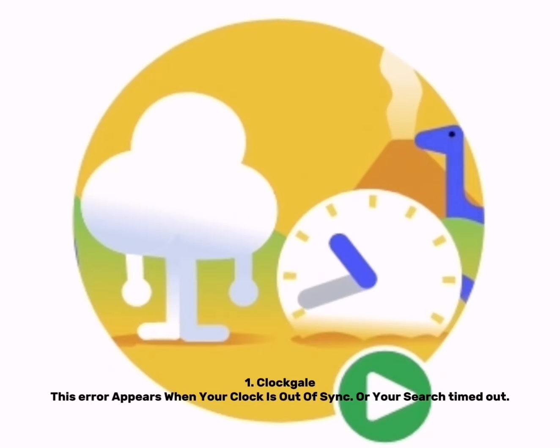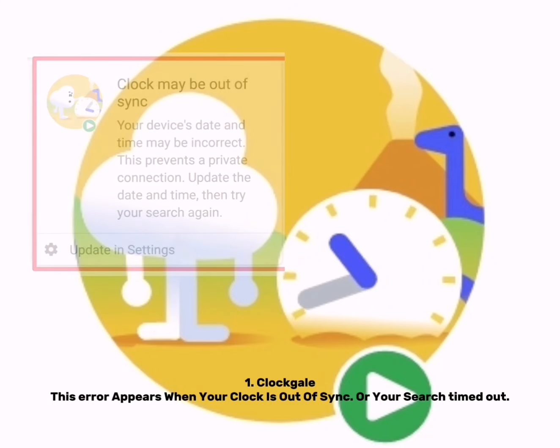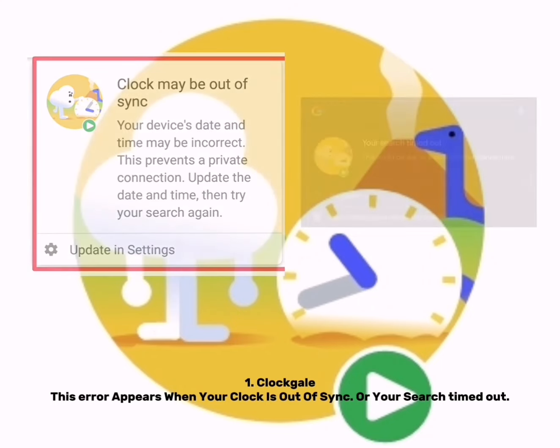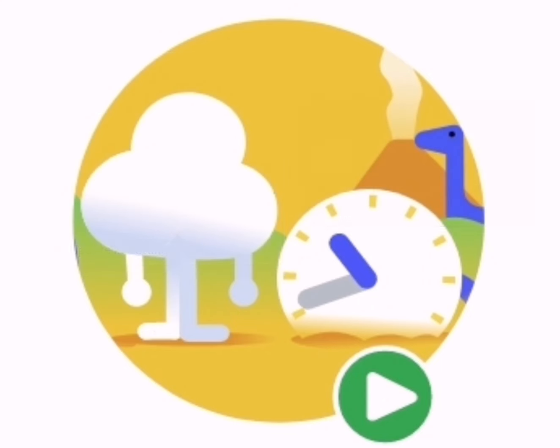Every Gale from Google errors. Number 1: Clock Gale. This error appears when your clock is out of sync, or your search timed out.